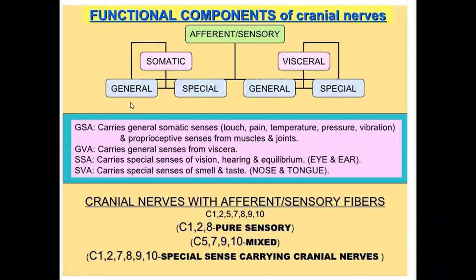General somatic afferent fibers carry general sensations and proprioceptive sensations from muscles and joints. General visceral afferent fibers carry general sensations from viscera — for example, sensations like distension from the intestines or the stomach.